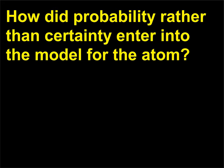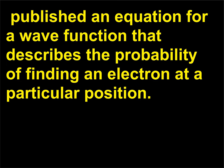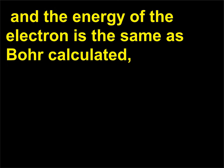How did probability rather than certainty enter into the model for the atom? In 1926 the Austrian physicist Erwin Schrödinger (1887–1961) published an equation for a wave function that describes the probability of finding an electron at a particular position. It agrees with Bohr's model in that the most probable radius for an electron is that given by the Bohr model, and the energy of the electron is the same as Bohr calculated.